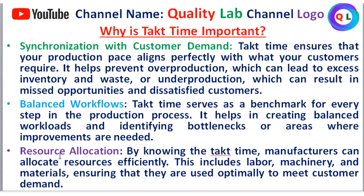It is the resource allocation — we need to understand resource allocation to produce a product. Which resources must we apply? This will allow you to identify quality problems and find the root of those quality problems.